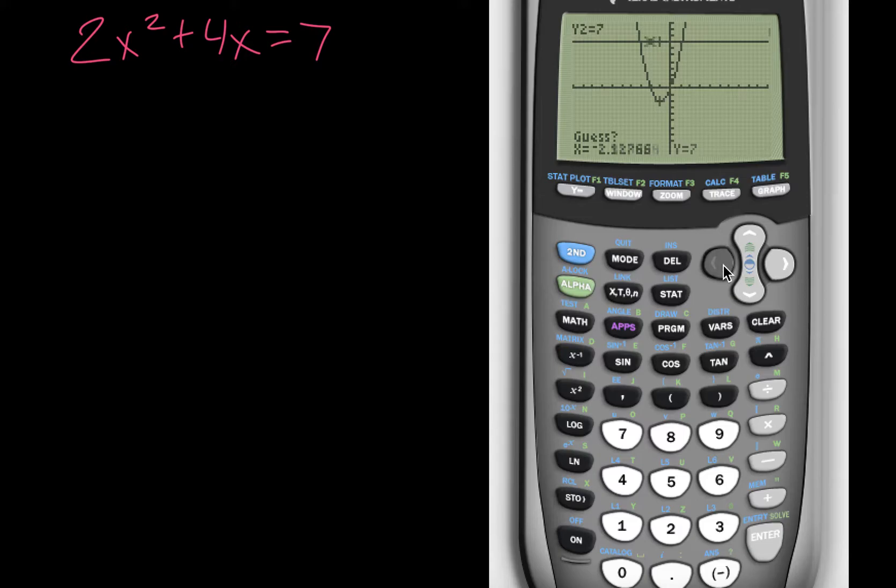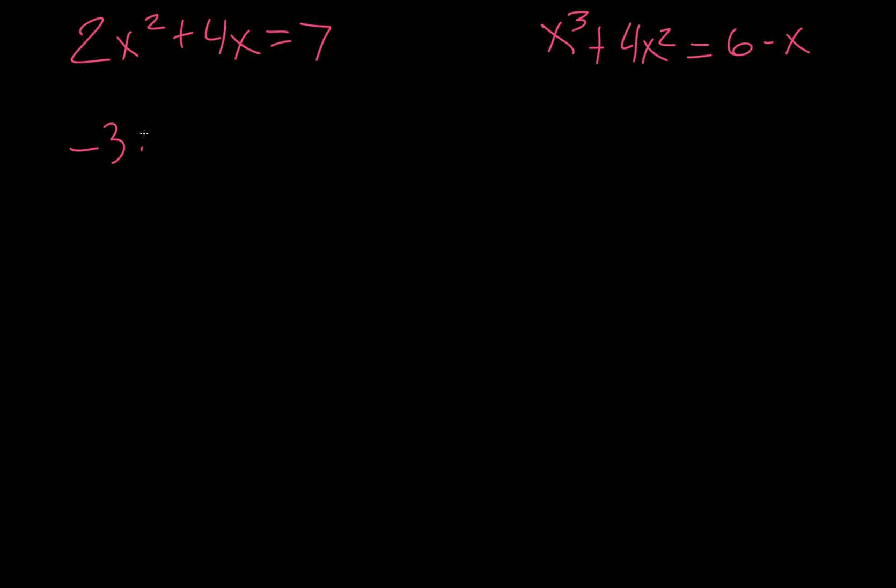Now because it crosses two places, this part's important. We want to put the cursor where we think that first intersection is. So I hit enter, it's a guess, and I'm going to write that down. So it's negative 3.12 is the first value of x that we get.